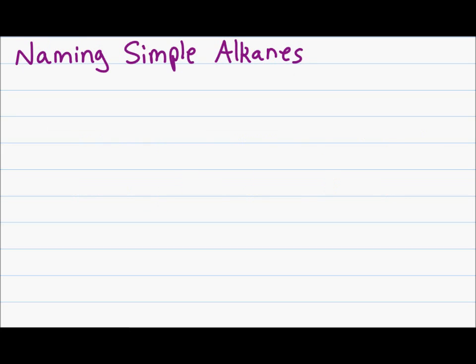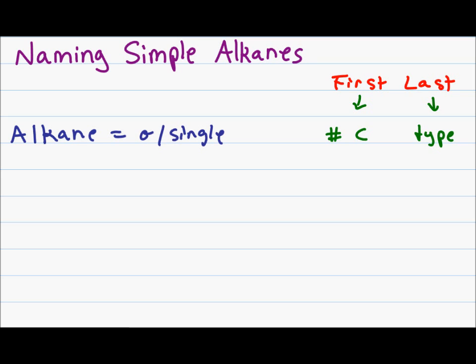Simple alkanes only have two parts to their name. The first name of a simple alkane refers to the number of carbons in the chain and the last name refers to the type of carbon chain. Recall that an alkane has only sigma or single bonds with sp3 hybridization. To name an alkane, we will use ane as the last name to show there are only single bonds in this molecule.